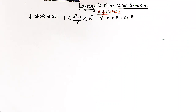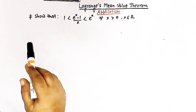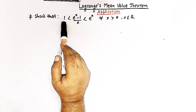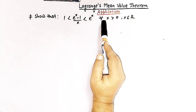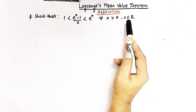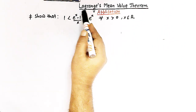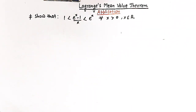Hello viewers. In today's session we are going to discuss another important application of Lagrange's mean value theorem. We are going to discuss a very important inequality in real analysis, where we have to show that e raised to x minus 1, divided by x, is greater than 1 but less than e raised to x, for all x greater than 0, where x belongs to the set of real numbers. We'll prove this inequality using the concept of Lagrange's mean value theorem.